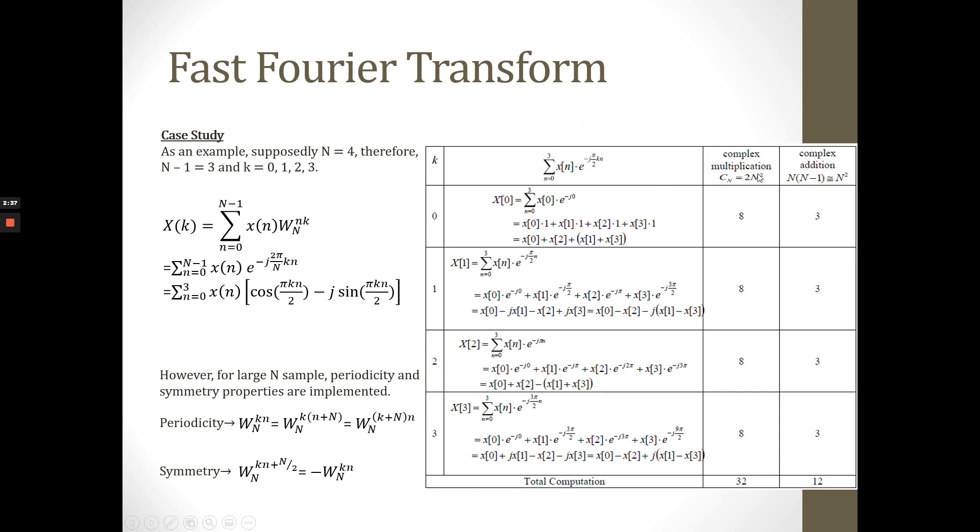For DFT, the complex multiplication is 2N squared and complex addition is N multiplied with N minus 1. So we have 8 for multiplication for each from k equal to 0 until 3, and for complex addition we have 3 from k equal to 0 until k equal to 3.